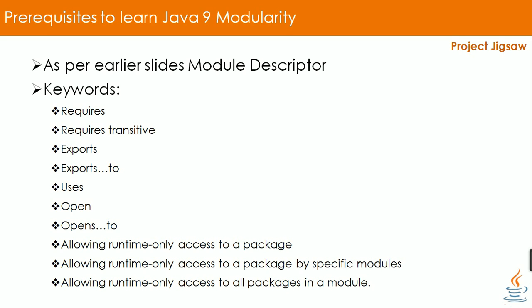The next keyword is allowing runtime-only access to a package by a specific module. An opens to module directive of the form 'opens package to comma-separated-list-of-modules' indicates that a specific package's public types are accessible to code in the listed modules at runtime only. All the types in the specified package are also accessible via reflection here as well.